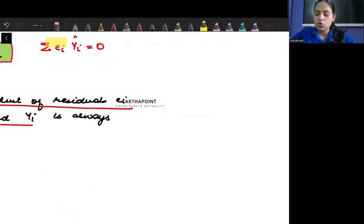Let's try to see if this is true or not. What I can do is go ahead and open up this Yi hat. So this will be summation ei times B1 plus B2 Xi.